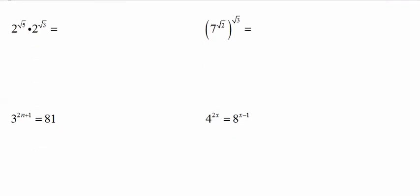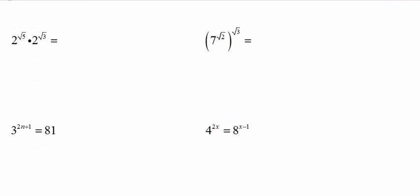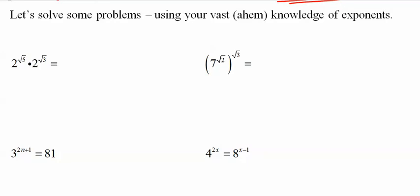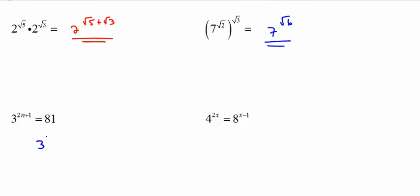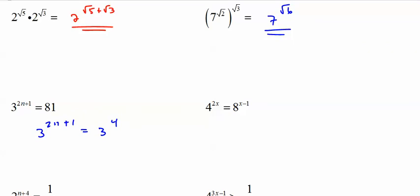A little bit review of exponents. I made a note here: we'll use your vast knowledge of exponents, which always astonishes me. You may want to pause this and try it on your own. I'm just going to blow through them. If we're multiplying, we add: this is just root 5 plus root 3, done. If we're going to a power to a power, we multiply, so this is 6, done. I always say if you're given an exponent problem, put everything in the lowest possible base. In other words, 3 to the 4th. If you don't know that 3 to the 4th is 81, I can't help you. Therefore 2n plus 1 equals 4, 2n equals 3, n equals 3/2.